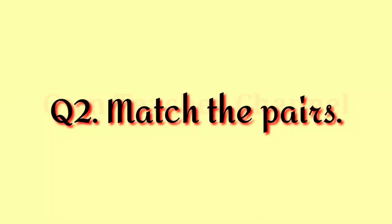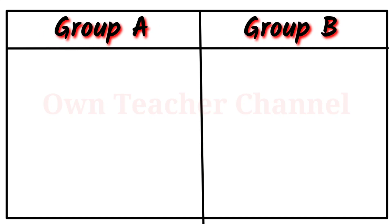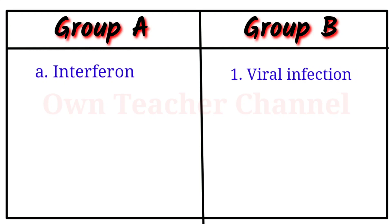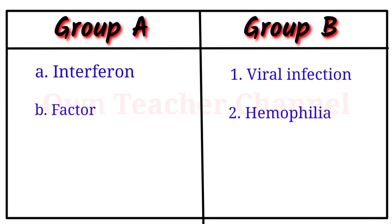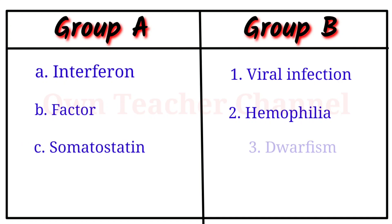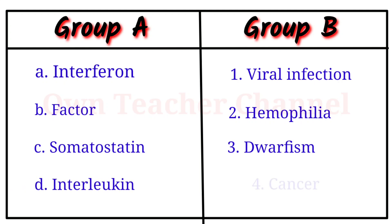Question 2: Match the pairs. Group A and Group B: (a) Interferon – viral infection. (b) Factor 8 – hemophilia. (c) Somatostatin – dwarfism. (d) Interleukin – cancer.